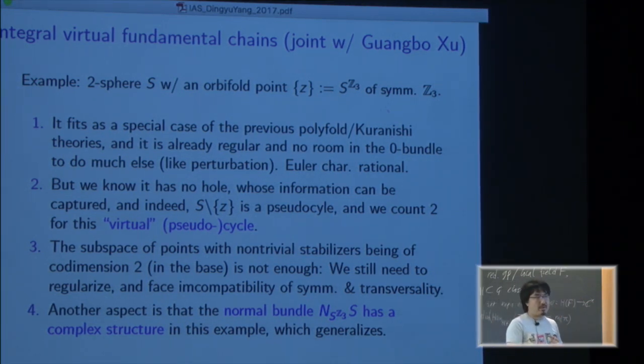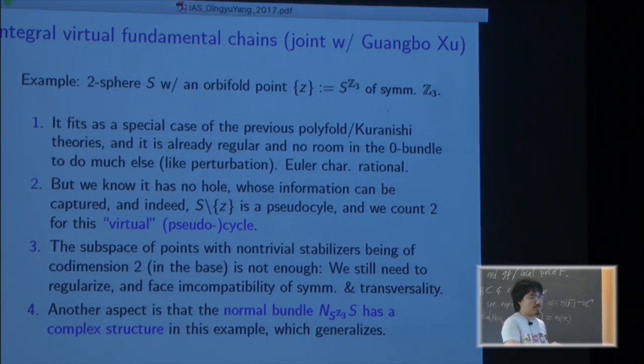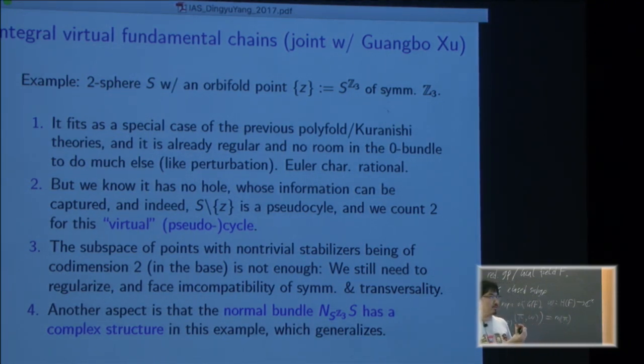And there's no way you can do any perturbation because the bundle is trivial and space already regular, and the virtual fundamental class, the Euler characteristic is rational, so what can you do with it? But the object has no hole which has some information, so it can be captured. Basically you remove those orbifold points, it's a pseudo-cycle and you can count two and that's your virtual cycle.